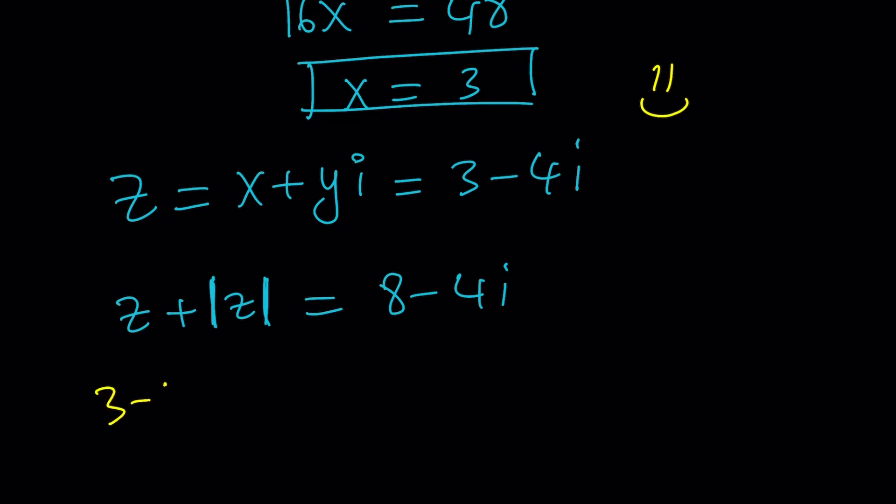What is Z? 3 minus 4I. This is easy. The absolute value of Z is, again, I said 3, 4, 5 triangle, so it's just 5. If you think about the Pythagorean theorem. And, from here, we get 3 plus 5, which is 8, minus 4I, which is the same as this one. And, yay, it checks. Therefore, our answer is correct.